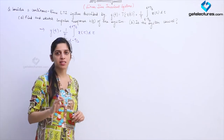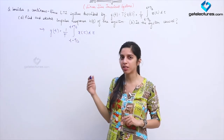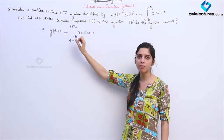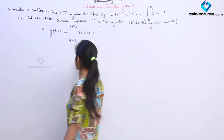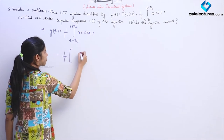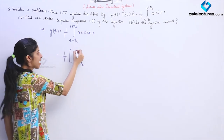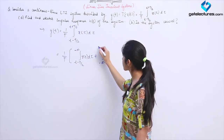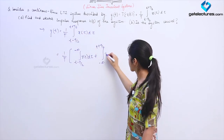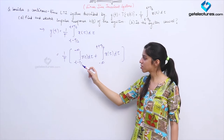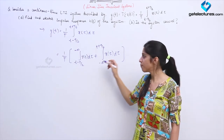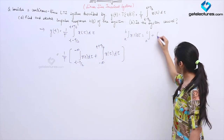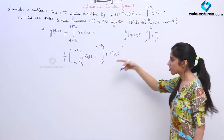Whenever I convolve a signal with a unit step signal I have an integral operation starting from minus infinity to some limit. So I want to change the lower limit of this integral to minus infinity using properties of integration. I take the integral and break it: keeping the lower limit as t − T/2 and taking the upper limit to minus infinity on one part, then from minus infinity to t + T/2 on the other. This is simply using the additive property of integration where an integral from a to b equals integral from a to c plus integral from c to b.